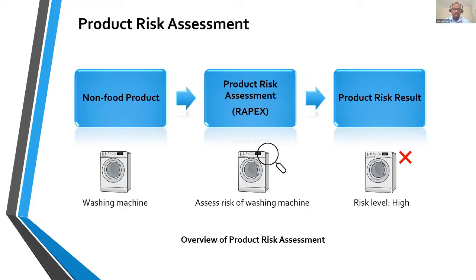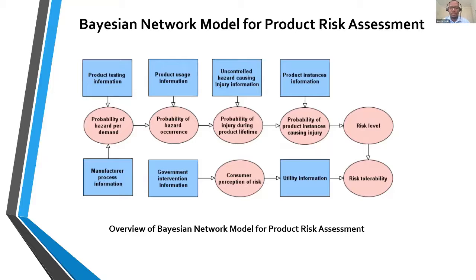Given the limitations of RAPEX, the aim of my research is to develop a Bayesian network to provide an improved, systematic method for product risk assessment that resolves those limitations. To do this, we met with the UK Government Office for Product Safety and Standards and reviewed literature to understand RAPEX and its limitations. Then, using reusable Bayesian network fragments called idioms, we built a Bayesian network model for product risk assessment. This model resolves the limitations of RAPEX, informs risk management decisions, and helps understand the effects of those decisions on consumer risk perception. Future phases include consumer behavior surveys and developing a web-based tool for regulators and manufacturers.